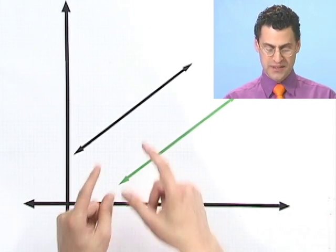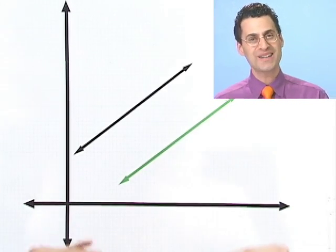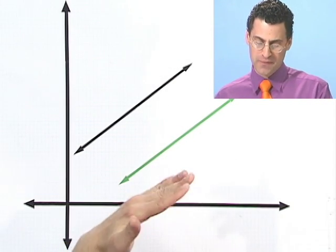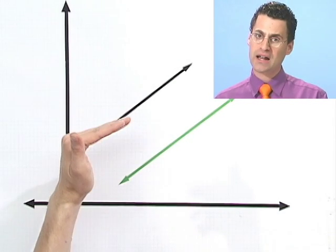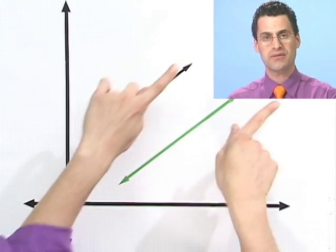So in fact, this system of equations, of linear equations, would have no solutions because there's no point in common. You can't be both on the green and both on the black lines at the same time because they sort of run parallel. You can never touch.